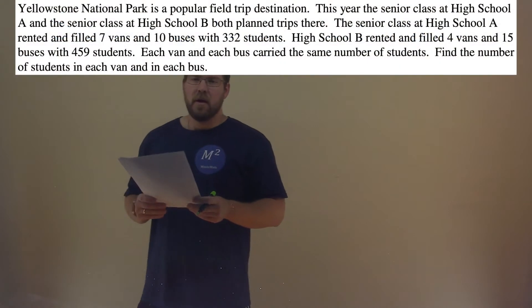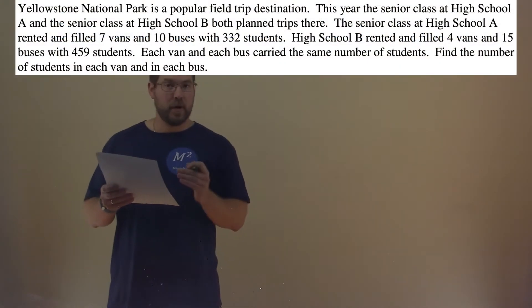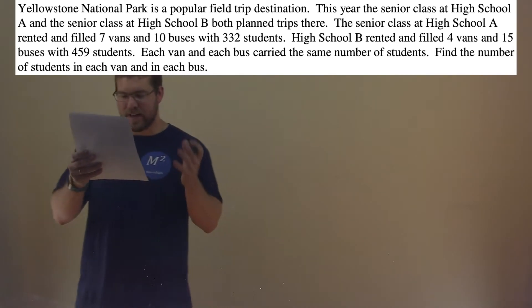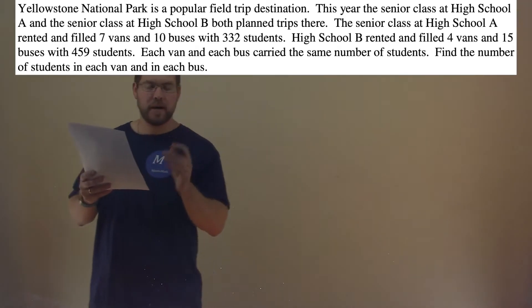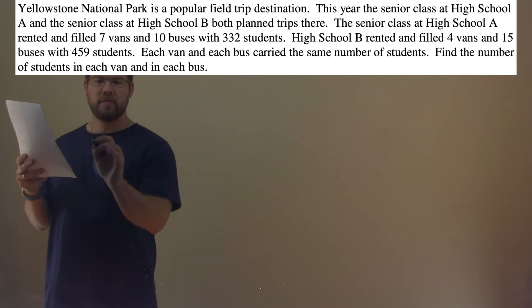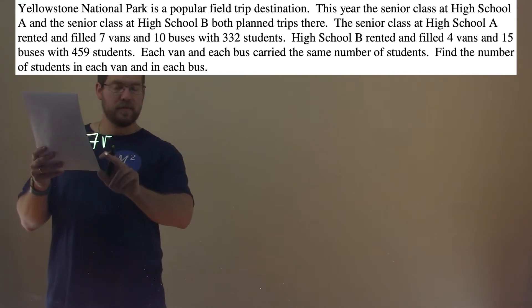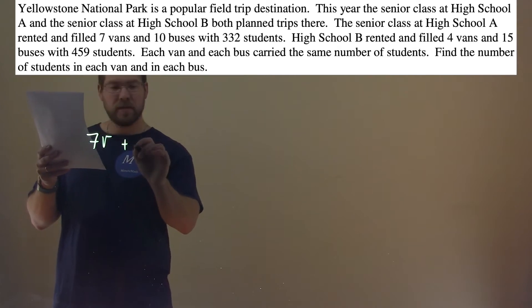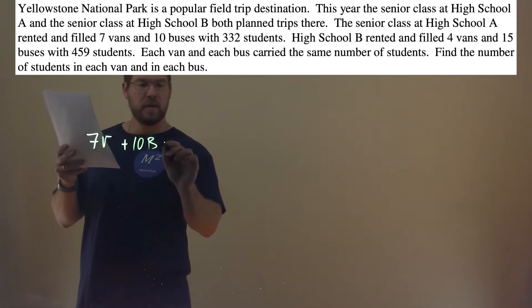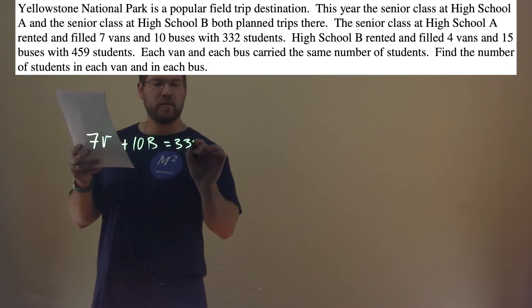Okay, we got to find some equations out of this word problem. Let's extract that information. The first part, High School A. They said they filled seven vans, so seven times v, v being the number of students in each van, plus 10 buses, b being the number of students in each bus, with 332 students.